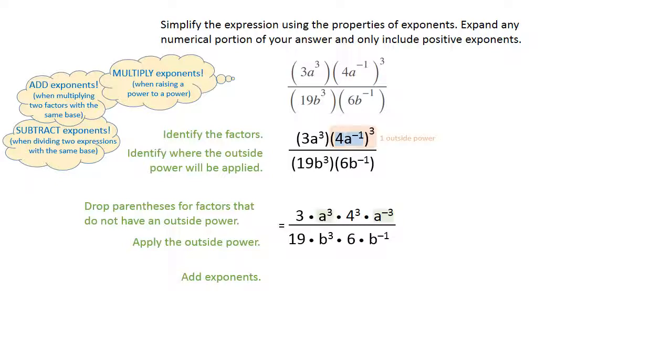Next, we're going to add exponents because we have two a's on the top, and we've got two b's on the bottom. Those are being multiplied. They have the same base. They're two factors with the same base. So we're just going to add those exponents.